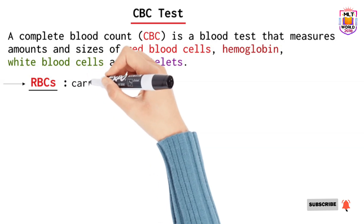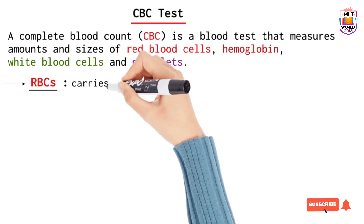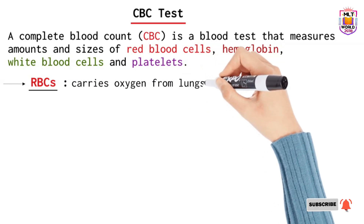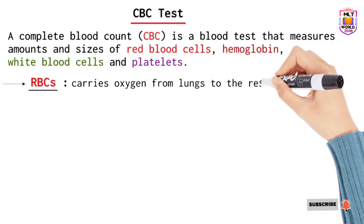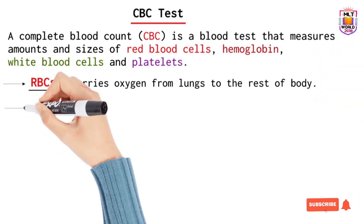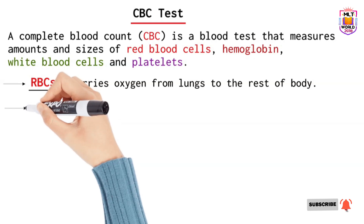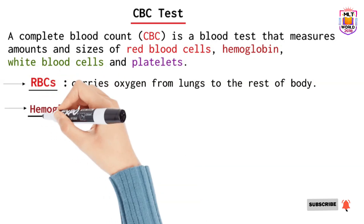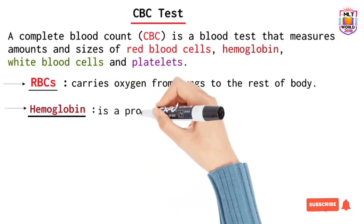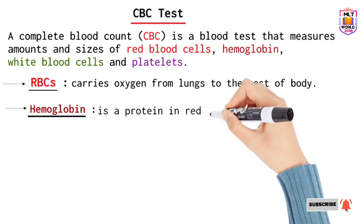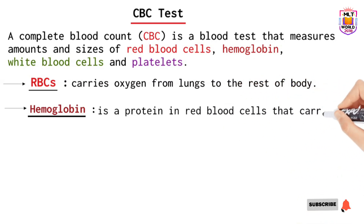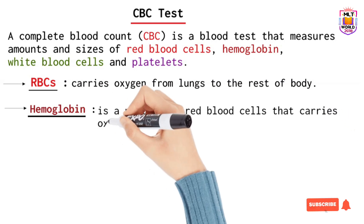First, what are RBCs? RBCs are red blood cells. Red blood cells carry oxygen from the lungs and deliver it to each tissue and cell of the body. Next is hemoglobin. Hemoglobin is a part of the red blood cell — a mature red blood cell is fully composed of hemoglobin — and its function is to transport oxygen from the lungs to the cells.